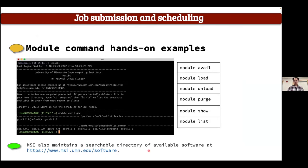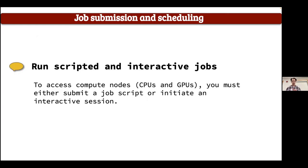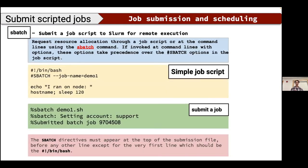Now for the highlight of this tutorial: how to run scripted or interactive jobs. To use any HPC cluster nodes, you must request CPUs or GPUs by either submitting a job script or initiating an interactive session. The command to submit a job script is sbatch — it requests resources through the job script you've prepared. You just need to use sbatch followed by your script filename.